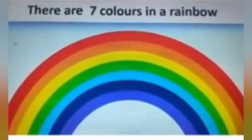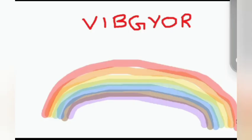Hello dear kids, today we are going to learn something about rainbow and its colors. Rainbow is a phenomenon that is caused by reflection, refraction, and dispersion of light in water droplets, resulting in a spectrum of light appearing in the sky.